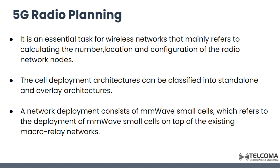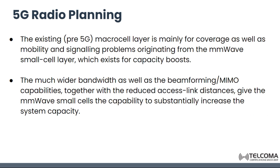The cell deployment architecture can be classified into standalone and overlay architectures. A network deployment consists of MM wave small cells, which refers to the deployment of MM wave small cells on top of existing macro relay networks. The existing pre-5G macro cell layer is mainly for coverage, mobility, and signaling problems which originate from the MM wave small cell layer, while the MM wave layer exists for the capacity boost.